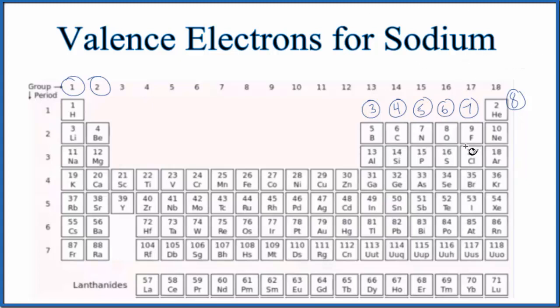The first way is just to look at the periodic table. So on the periodic table, here's sodium right here. And because sodium is in group one on the periodic table, it has one valence electron.